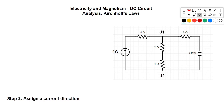Next, we assign our current directions. Be careful here — the current from the current source already has a direction shown by the arrow, so we don't need to give it a separate label; we know its value and direction. We just need to worry about the other paths, so we'll call those I1 and I2, going clockwise. Remember, these directions and naming conventions are arbitrary. Then label the positive and negative sides of all resistors and batteries — whatever the current hits first is positive — and follow the assigned terminals on the battery.